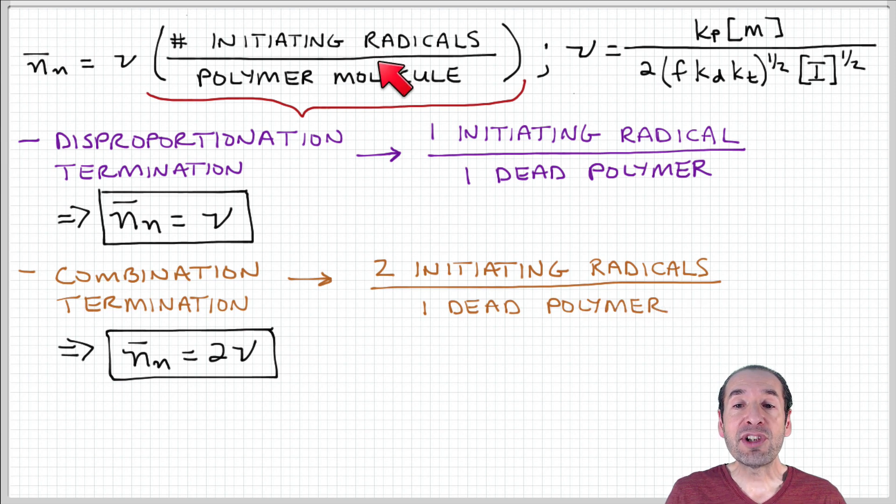So this ratio of initiating radicals per polymer then is equal to two. Therefore, if we have combination termination, the number average degree of polymerization is equal to two times this parameter ν.